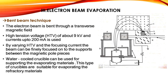The last method for electron beam evaporation is the bend beam technique. The electron beam is bent through a transverse magnetic field. A high tension voltage of about 9 kV and currents up to 200 mA are used. By varying the high tension voltage and focusing current, the beam can be finely focused onto the supports between the magnetic pole pieces. Water-cooled crucibles can be used for supporting the evaporating materials and are suitable for evaporating refractory materials.